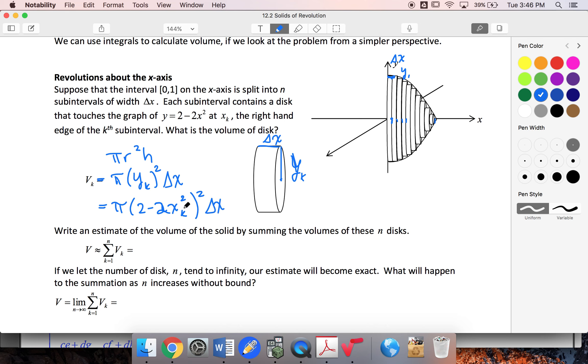So in this way, I could take my 0 to 1, divide it up into n intervals, and find my volume by doing the sum from k equals 1 to n of π times y of x sub k squared, squared to get the r squared, and then multiply it by my Δx.